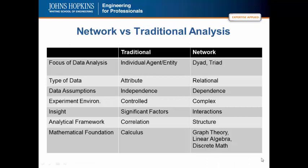This chart just shows a contrast between network and traditional analysis. In traditional analysis, we're focused on individuals. What can we say about this person? What can we say about their IQ, their education, their height, their individual attributes? In network studies, we're interested in the relations, which is the dyad between two or the triad between three people. We're less interested in attributes and more interested in the relationships.